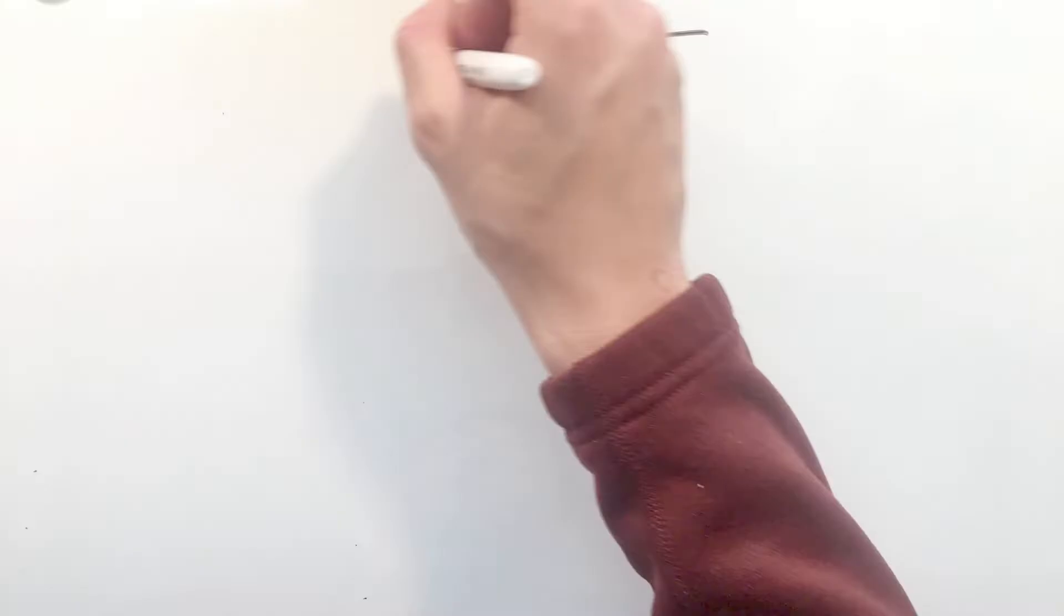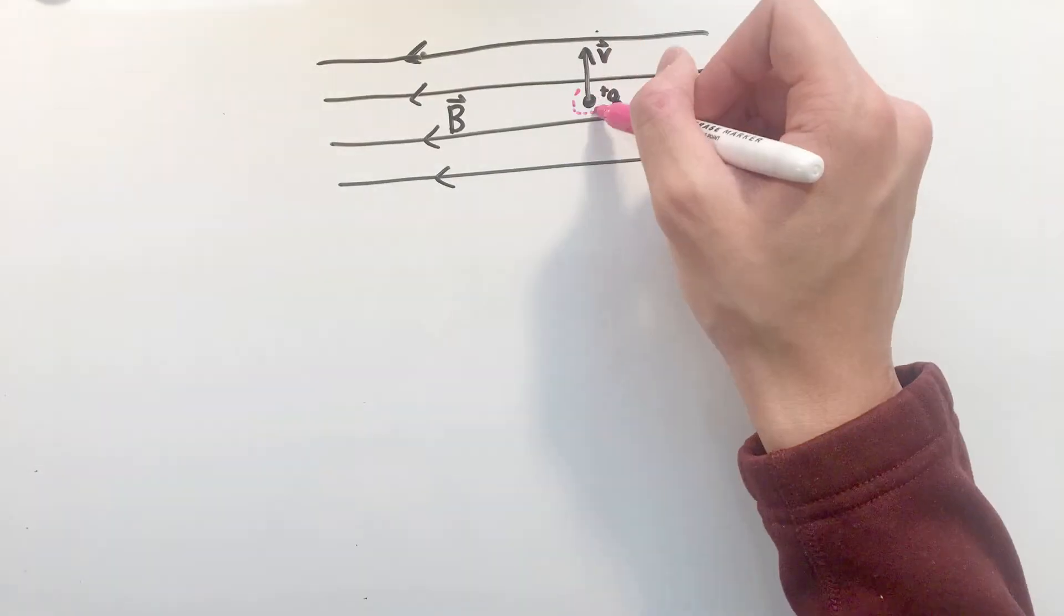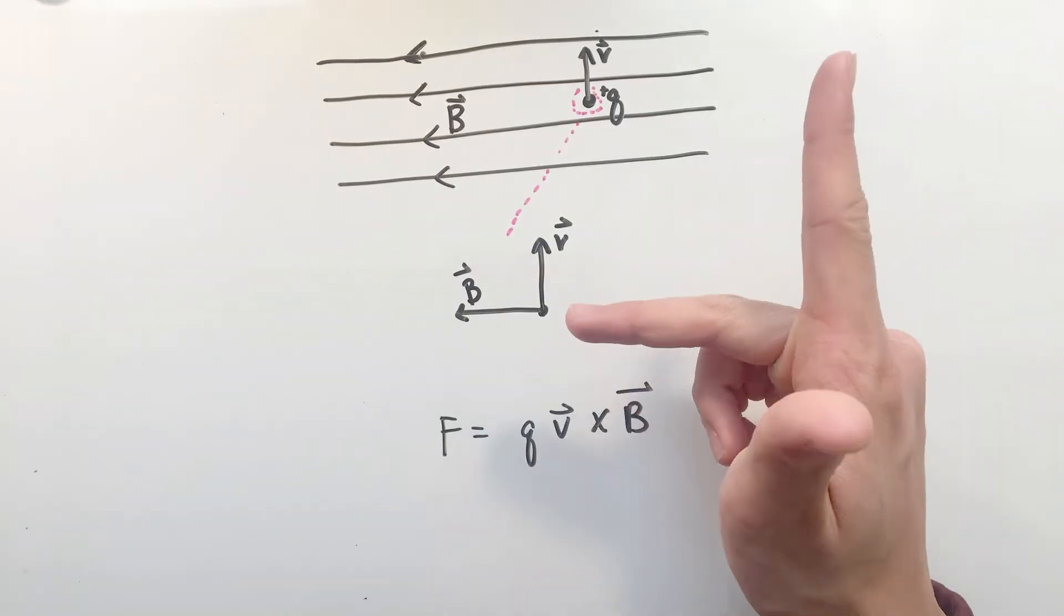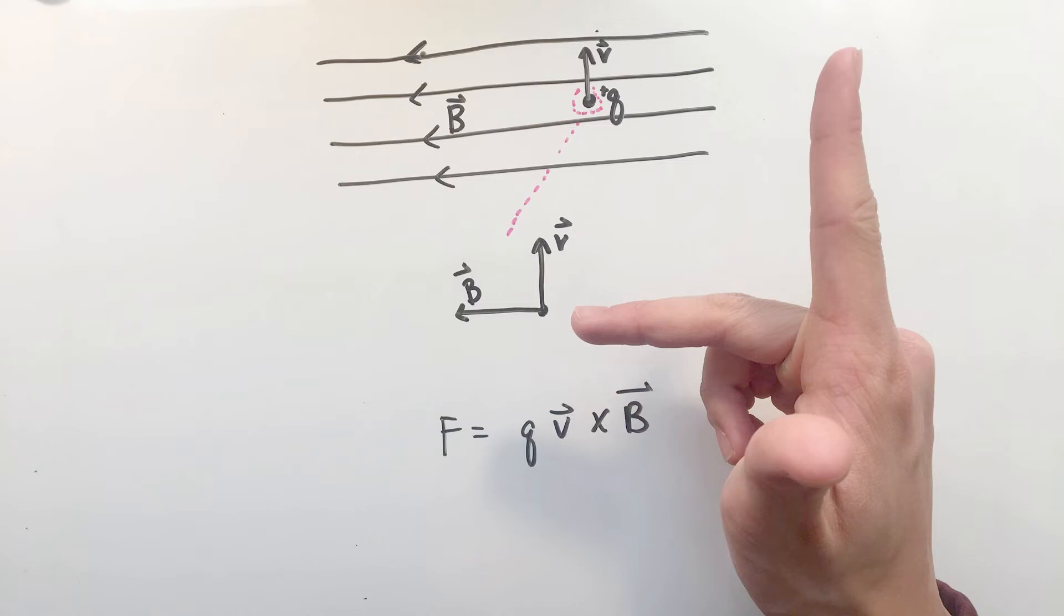While there are many different versions of the right-hand rule, my favorite is to point your right index finger along the first vector, your right middle finger along the second, with your thumb pointing in the direction of the cross product.